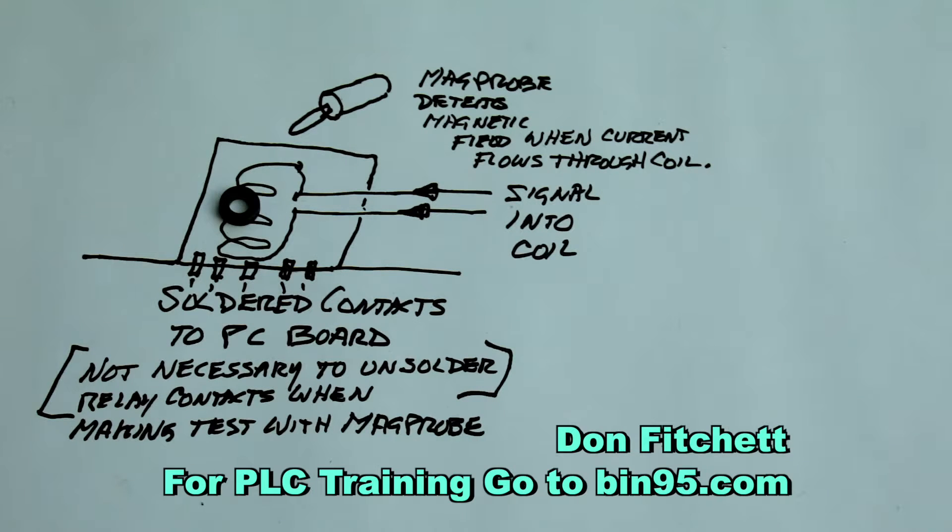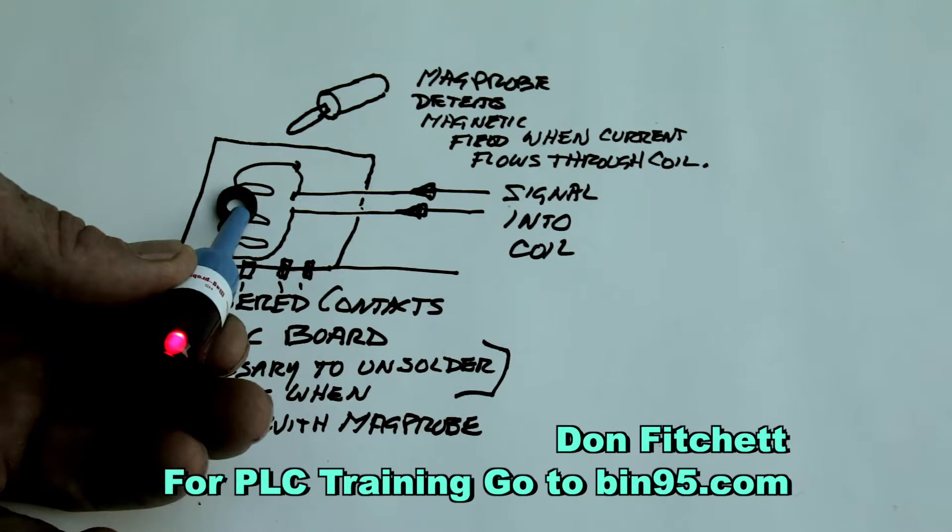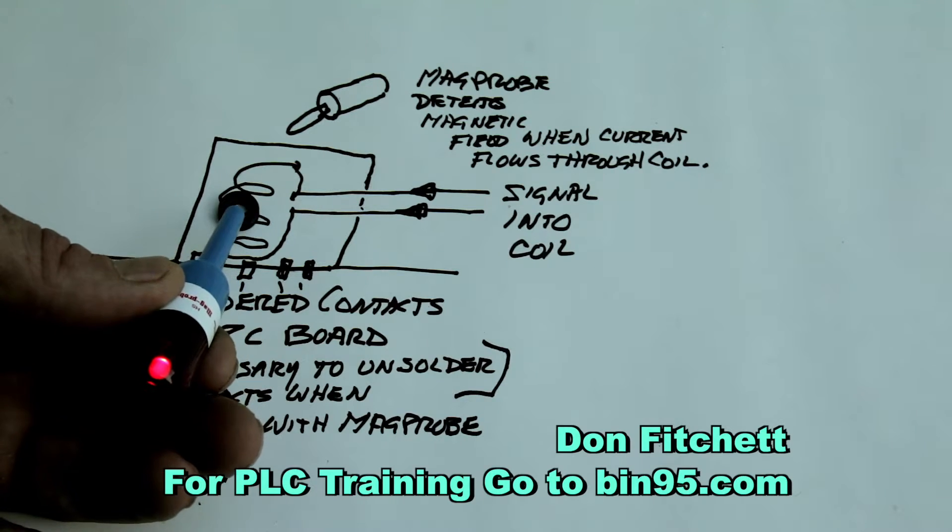Now if you're troubleshooting a PLC, this is really good too. PLC is sending the signal to some critical relays that are not doing their job and you want to find out if it's actually sending the signal. You just hold the mag probe up to the relay and instantly you know that you've got a signal from the PLC.